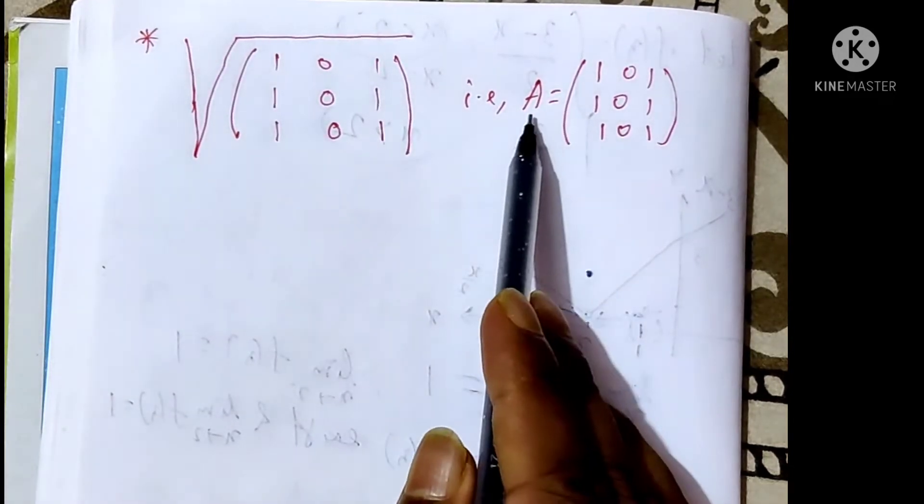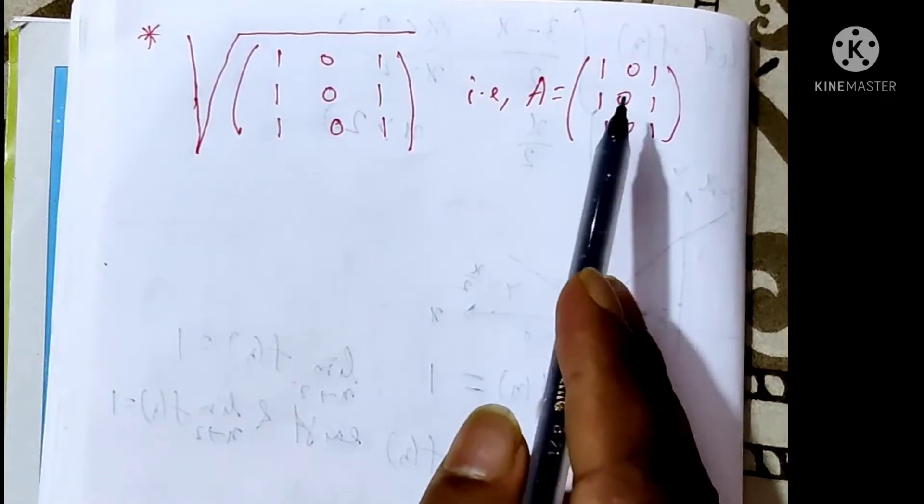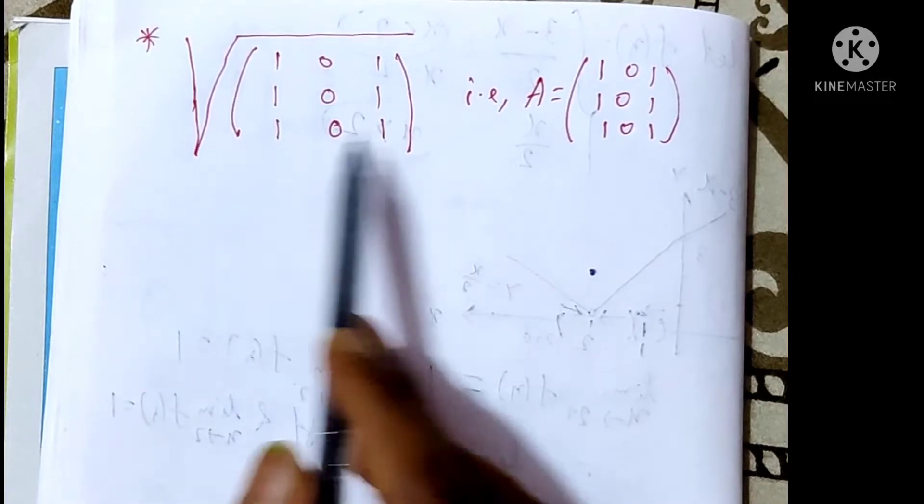Here, A equals to this matrix. Now, you find the root of the matrix A.